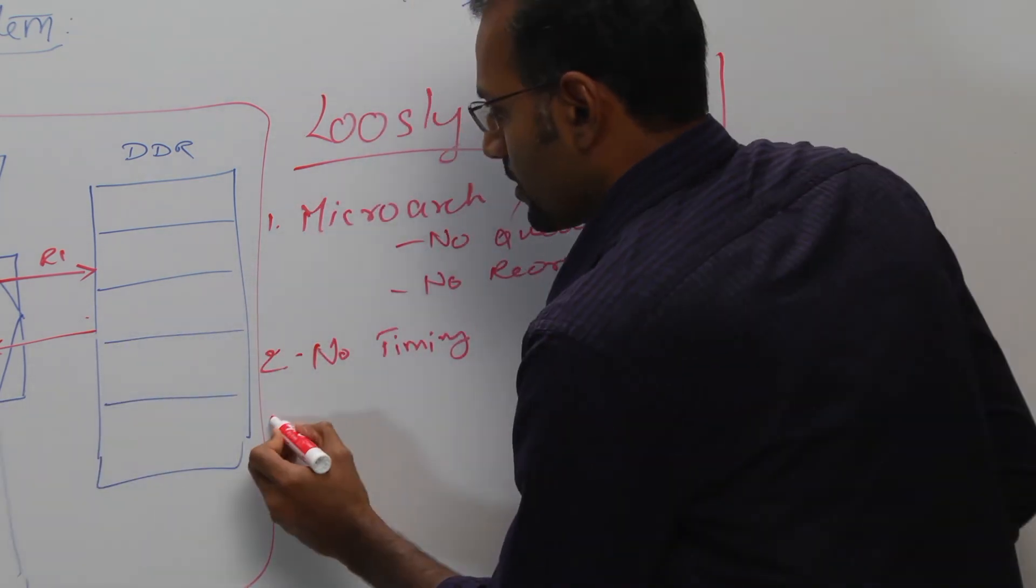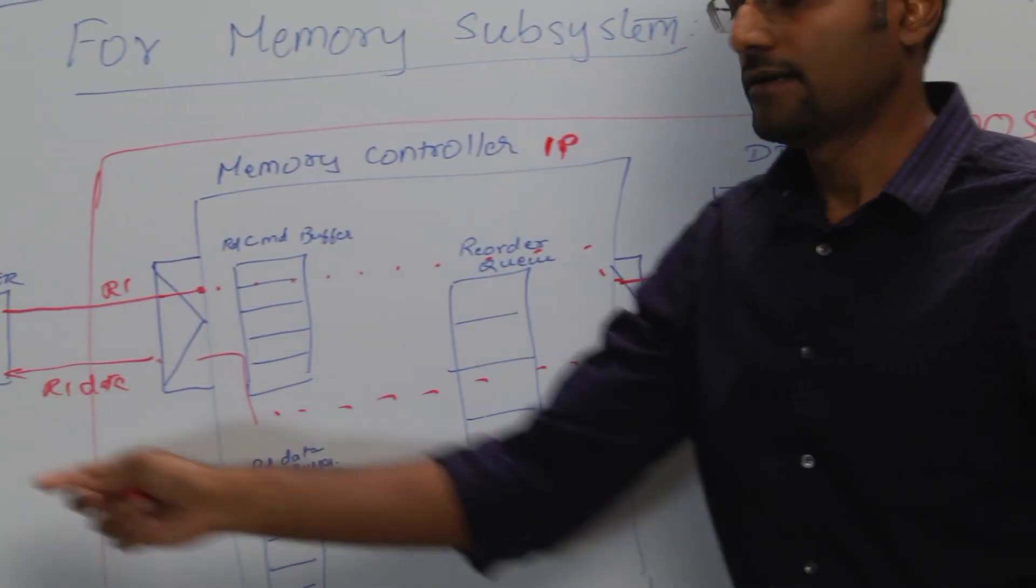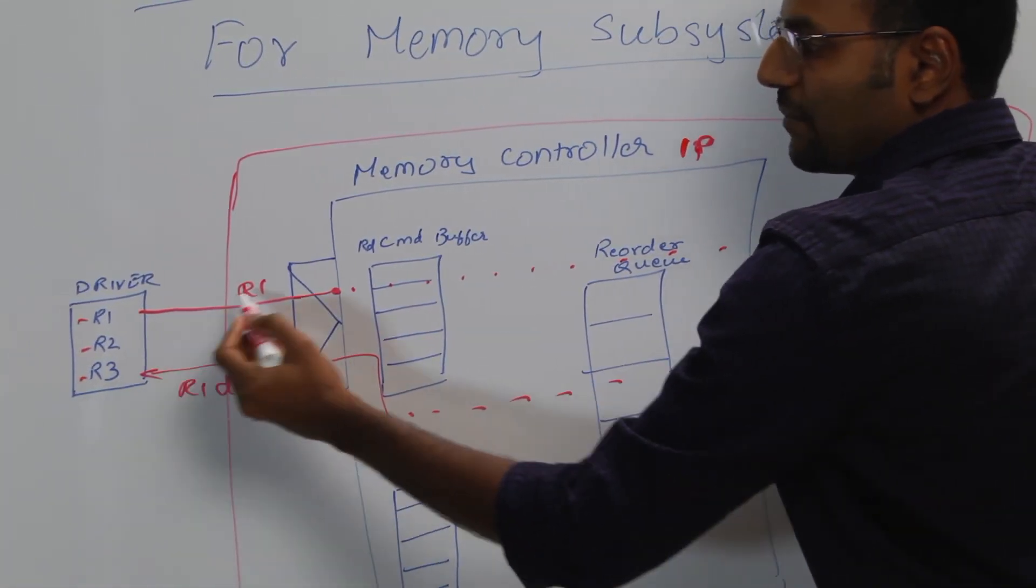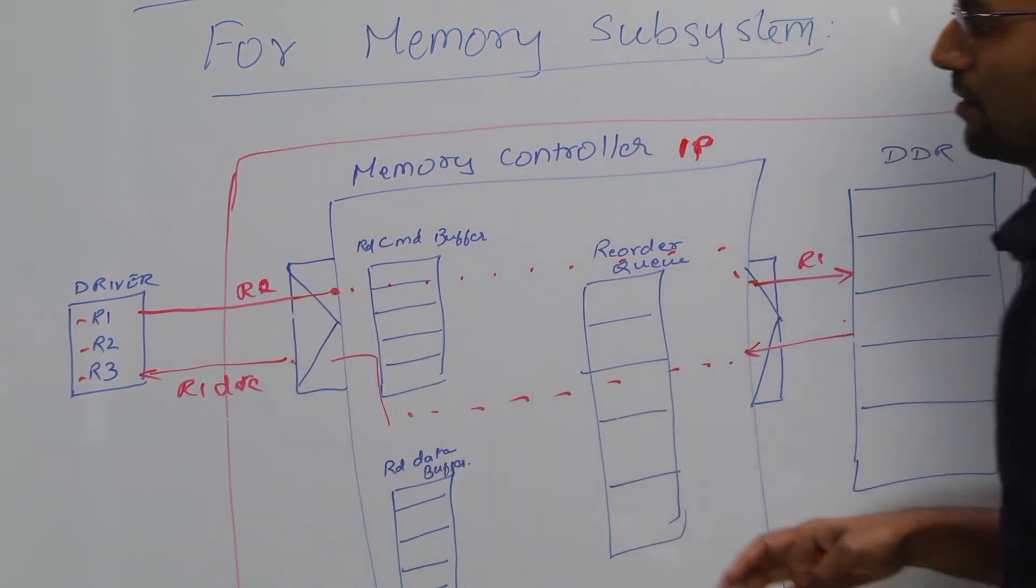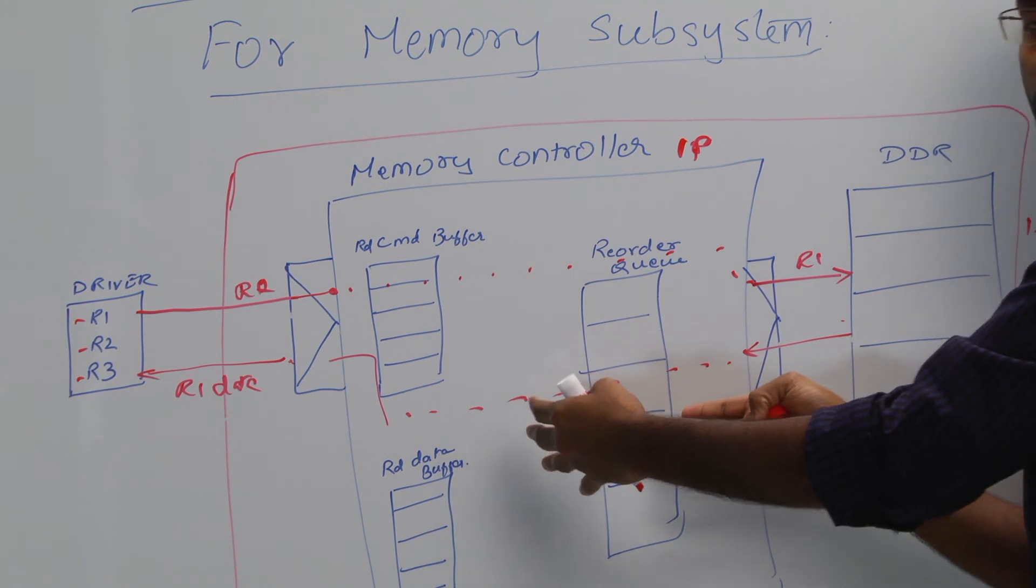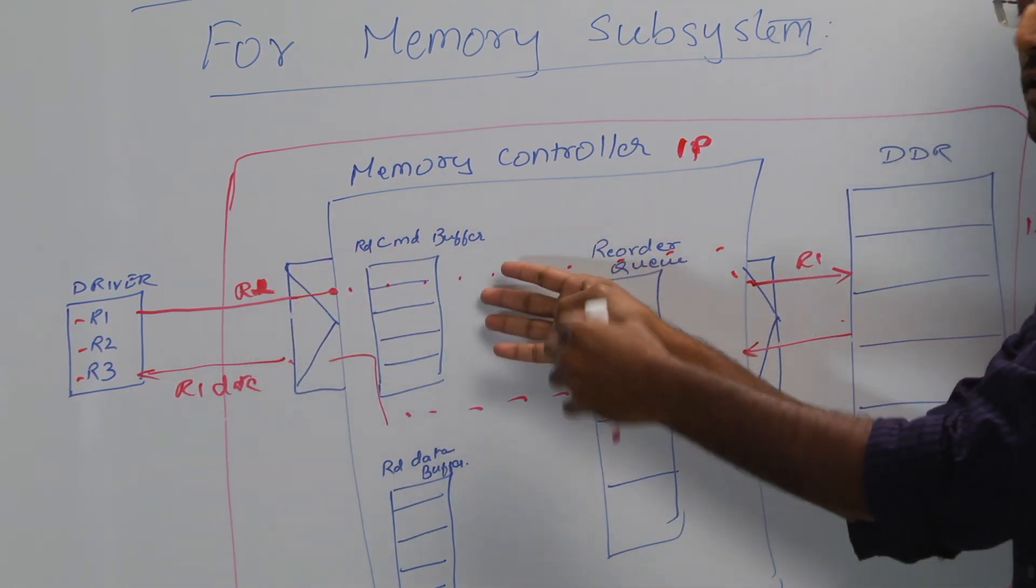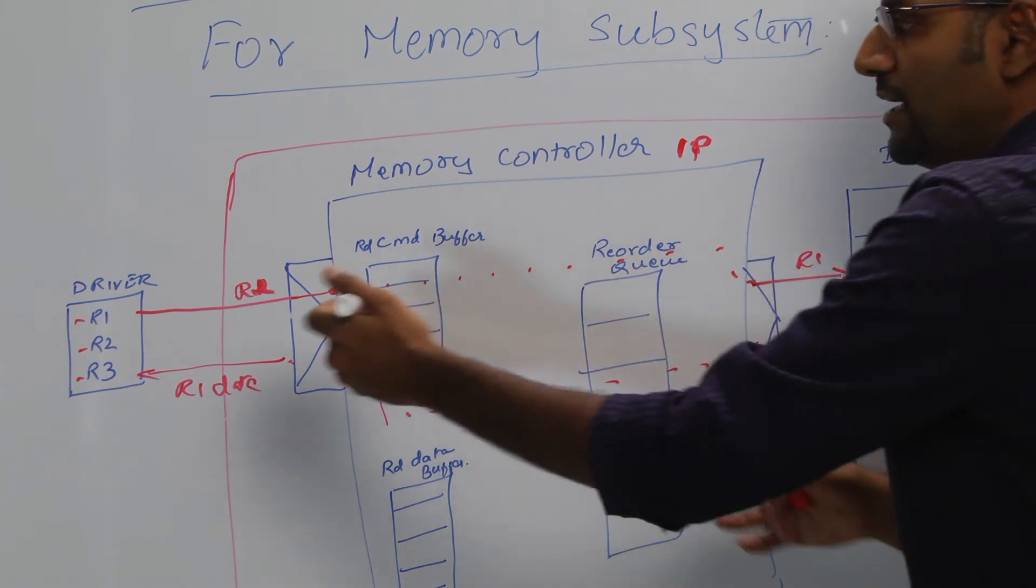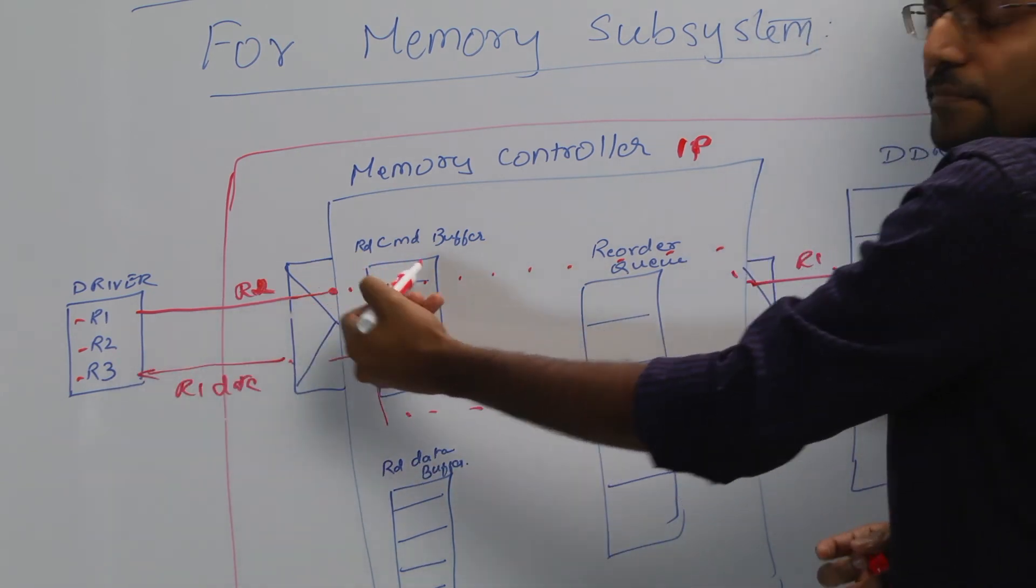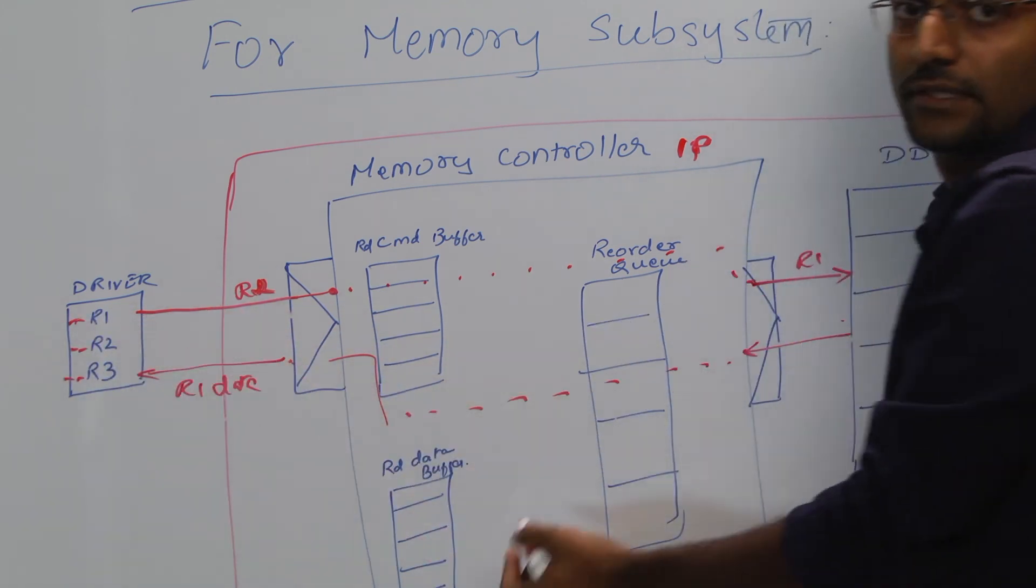Now the moment the data response goes back, that's when the second read command can be fetched. As you can imagine, there is no real queue inside that's being modeled. So there is no way you could store read one and take another read command. So the read response has to be back for it to accept another read, even though it was already readily available.